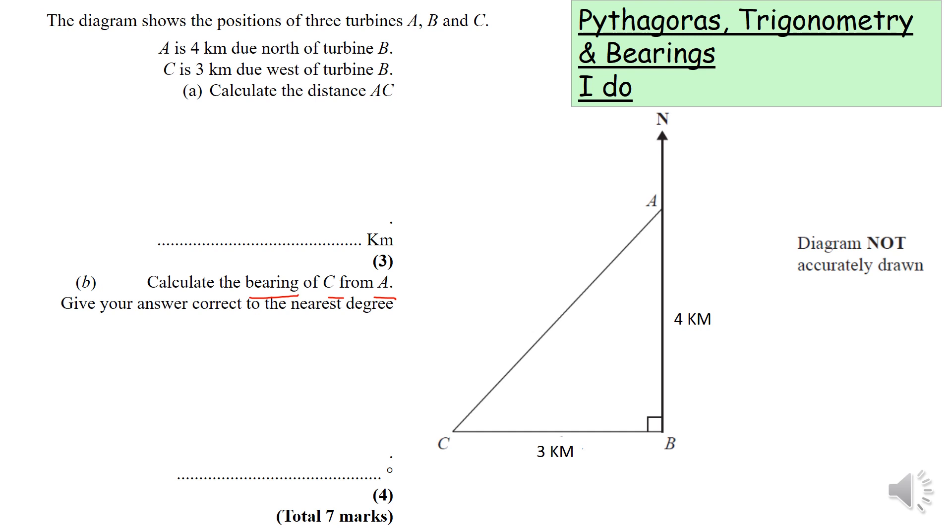It's asking to calculate the bearing of C from A. The letter that comes after the word 'from' is where you start, so I'm going to go clockwise from A to C. The letter that comes after the word 'from,' that's where you start, and you go clockwise.